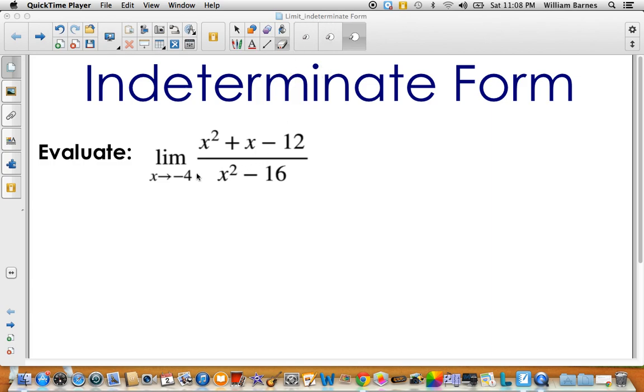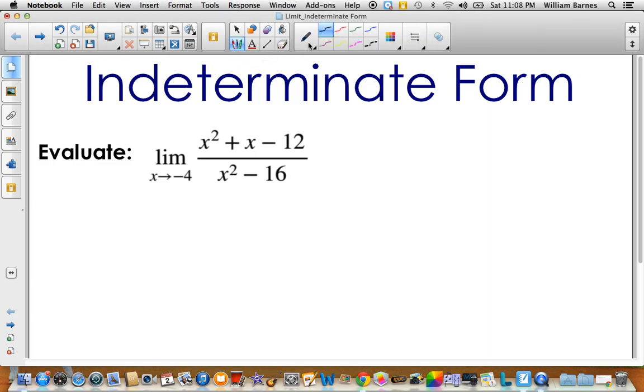So what I mean by that, if I take this negative 4 here, and I go ahead and sub it into, let me just get a pen out, and sub it into this guy, so I'd have, on the top I would have, negative 4 squared minus 4 minus 12, which of course I'd do it to the bottom as well. So negative 4 squared minus 16.